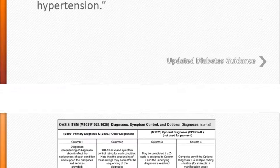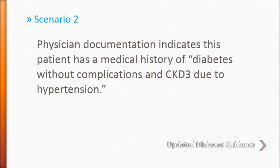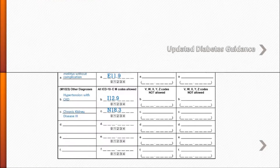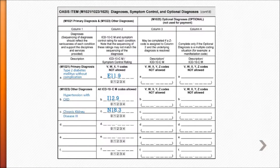In our second scenario, the physician documentation indicates this patient has a medical history of diabetes without complications and CKD3 due to hypertension. This is how I've coded it: M1021A, type 2 diabetes mellitus without complication, E11.9.